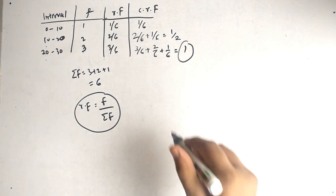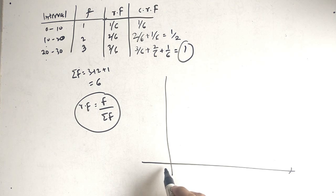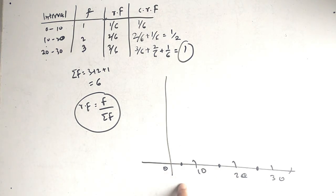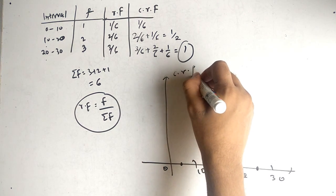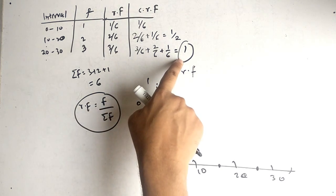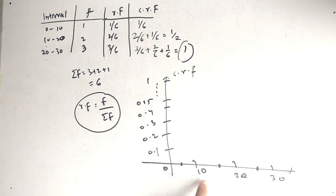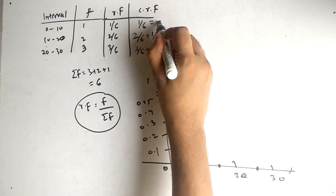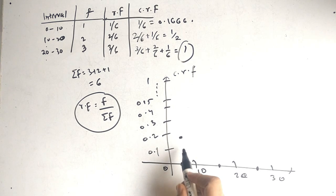Now we have the table and we have to plot. On the x-axis we have intervals 0, 10, 20, 30. Note that we have to plot at the middle of each interval. On the y-axis we have cumulative relative frequency, so the coordinates go 0.1, 0.2, 0.3, up to 1. For the interval 0 to 10, choose the middle point and match it with the cumulative relative frequency — approximately 0.1667 (since 1/6 ≈ 0.1667).